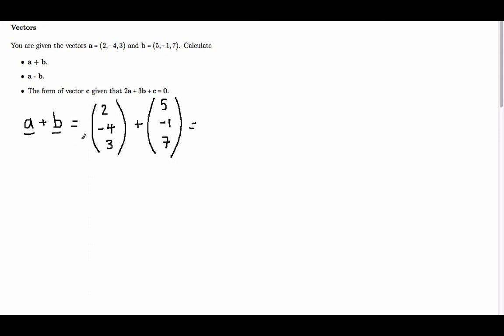So when we add two vectors together, we just add each of the components. So we add the x components, the y components, and the z components. So we have 2 plus 5, we have minus 4 plus minus 1, and we have 3 plus 7.